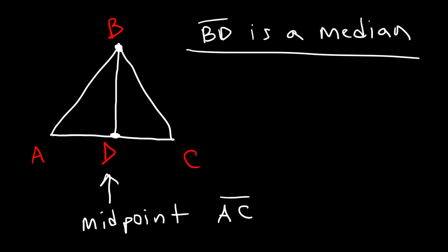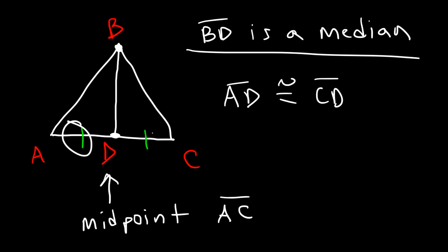A midpoint is basically a point in the middle. The midpoint breaks the segment into two congruent segments, which means that AD is congruent to DC. And that's all you need to know about a median. A median is simply a line segment that connects the vertex of one side of the triangle to the midpoint of the other, and the median will bisect that segment — splitting it into two congruent parts.